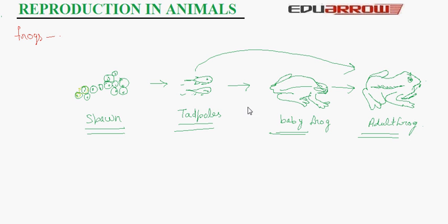Now reproduction in insects. All insects develop from eggs. Some insects such as grasshoppers and cockroaches pass through three stages in their life cycle.